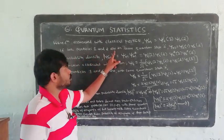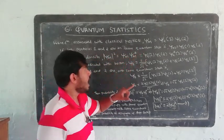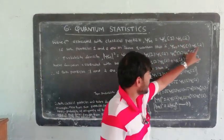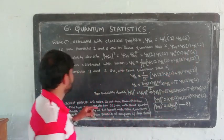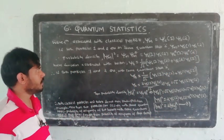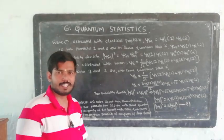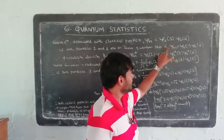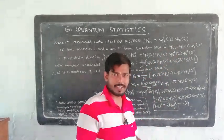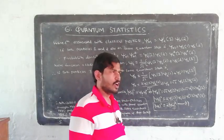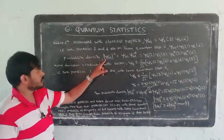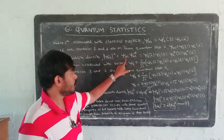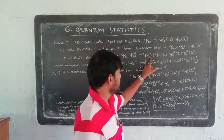If both particles 1 and 2 are in the same quantum state a, then the wave function psi_m is equal to psi_a of 1, psi_a of 2. The probability density is psi_m squared, which means psi_m times psi_m star — the complex conjugate of the wave function. So psi_m star equals psi_a star of 1 times psi_a of 2.